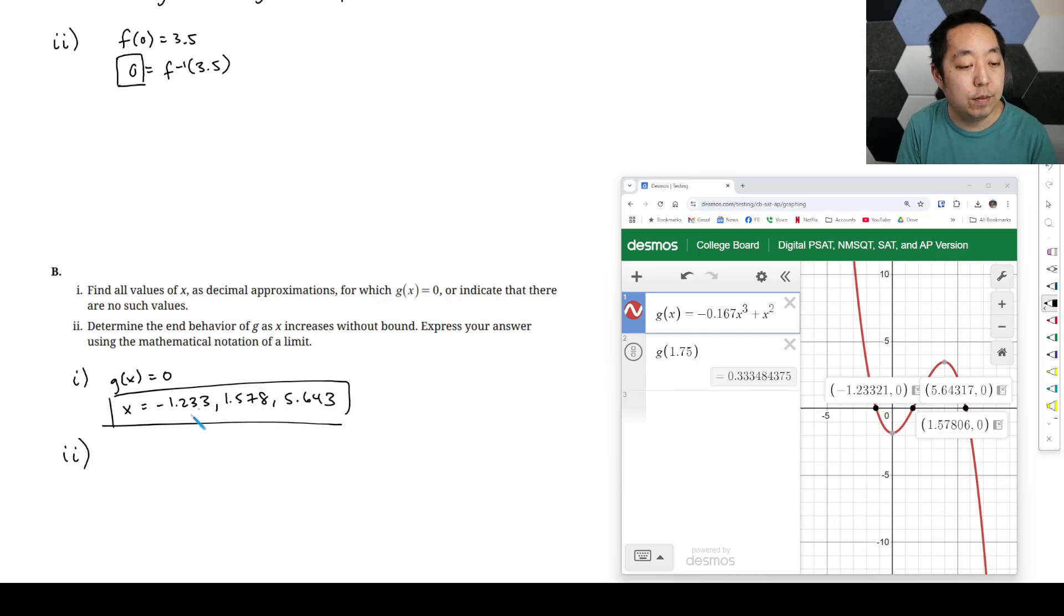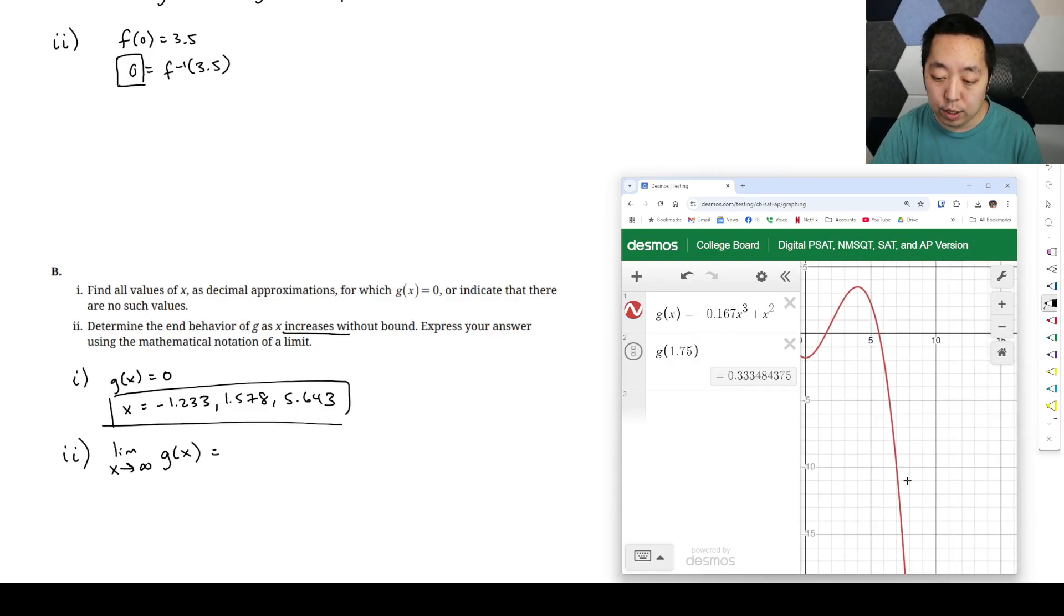And then we want to determine the behavior of g as x increases without bound express your answer. So x is increasing, we want the limit as x goes to infinity of g of x. And that's our notation. We're saying as x goes infinity, what's the y value do? Well, it's just going to continue downward, right? Downward here. So that's going to be negative infinity. And so that would be our notation for that. That's our limit notation there.